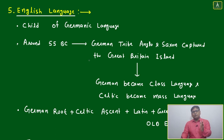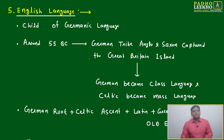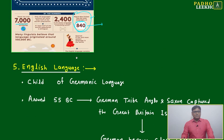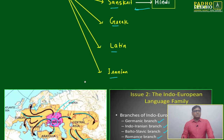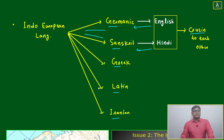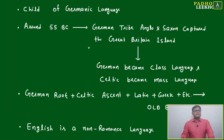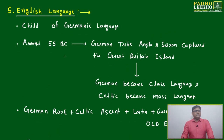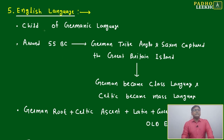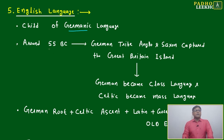From language family to Indo-European, and now from Indo-European we are coming to the English language. We have seen the hierarchy: Indo-European → Germanic → English. We have already seen this hierarchy, so now it will be easy. The English language is a child of the Germanic language.